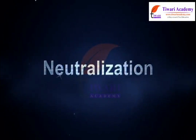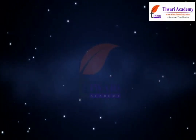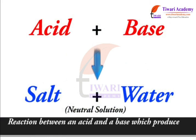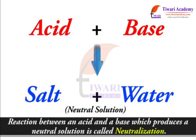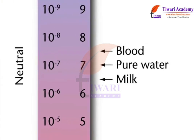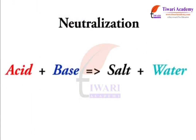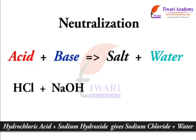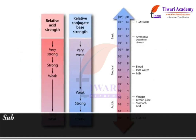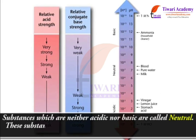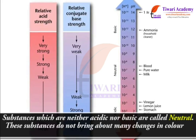Neutralization: the reaction between an acid and a base which produces a neutral solution is called neutralization. The pH of a neutral solution is 7. For example: hydrochloric acid plus sodium hydroxide gives sodium chloride plus water. Substances which are neither acidic nor basic are called neutral. These substances do not bring about many changes in the color of indicators.